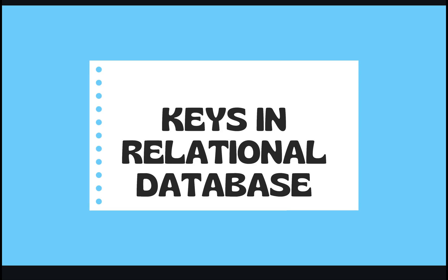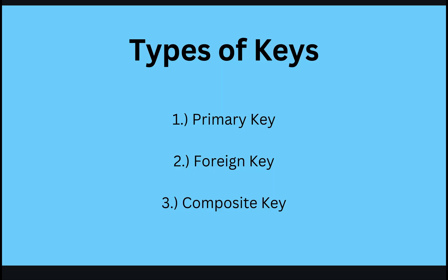Welcome! Today you'll be learning about different types of keys in relational databases. There are three types of keys: the first one is the primary key, the second is the foreign key, and the third is the composite key.